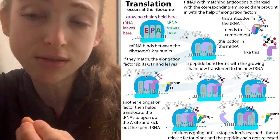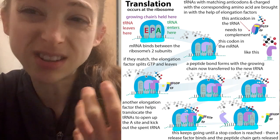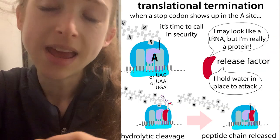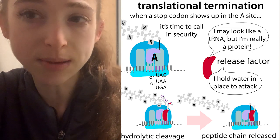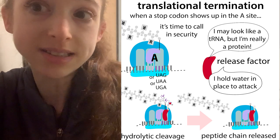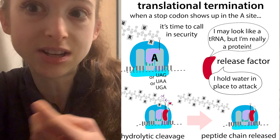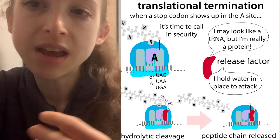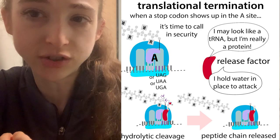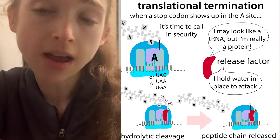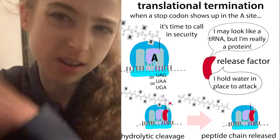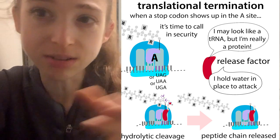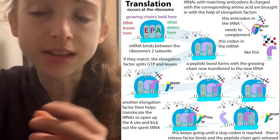The ribosome goes along adding amino acids until it reaches a stop codon — a signal telling it to stop making that protein. Instead of a new tRNA coming in with the next amino acid, a release factor comes in. Rather than attacking with an incoming amino acid, the release factor eggs on water to attack the growing chain. Water attacks and the growing chain is released. Then other factors come in and help the ribosome come apart and fall off the RNA, so it can be reused for new messenger RNAs.